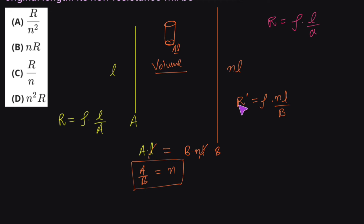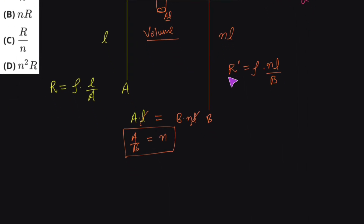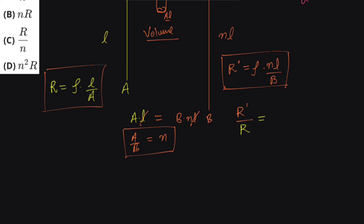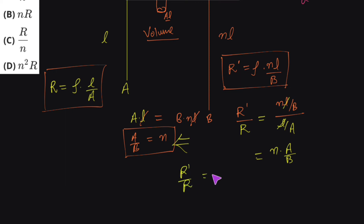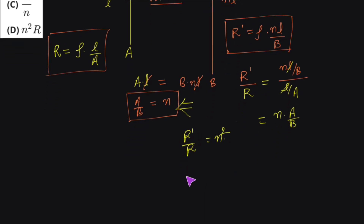Now we need to find the relationship between R' and R. We divide the two equations: R' divided by R equals (rho · nl / b) divided by (rho · l / a). Rho and l cancel, giving n times a upon b. Since a upon b equals n, we get R' upon R equals n times n equals n squared. So R' equals n squared times R.